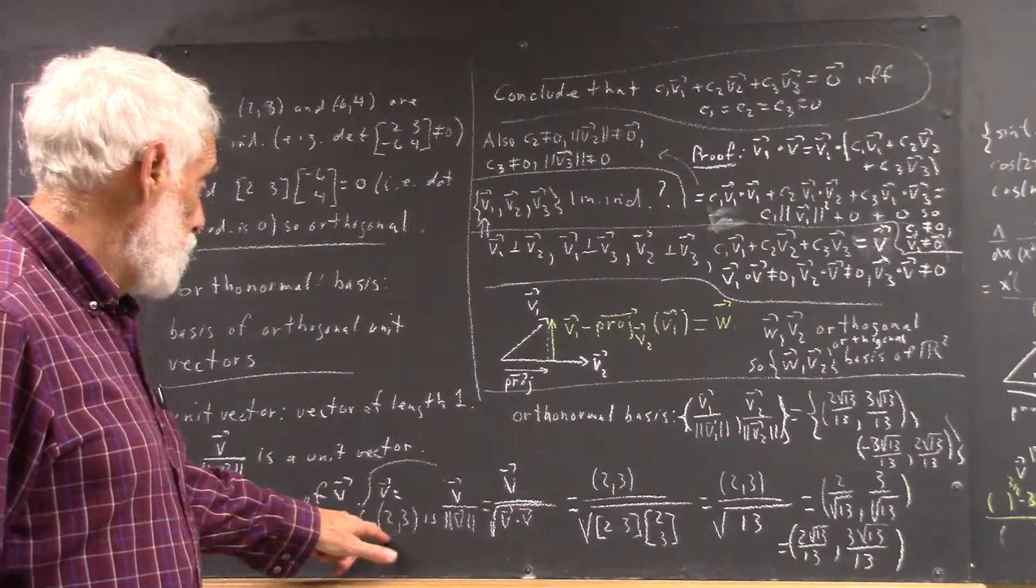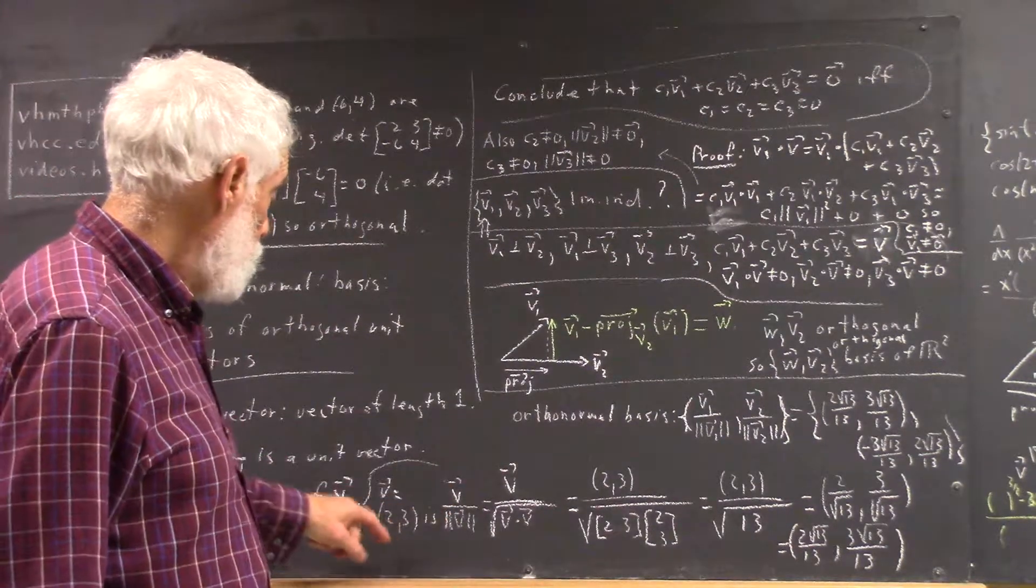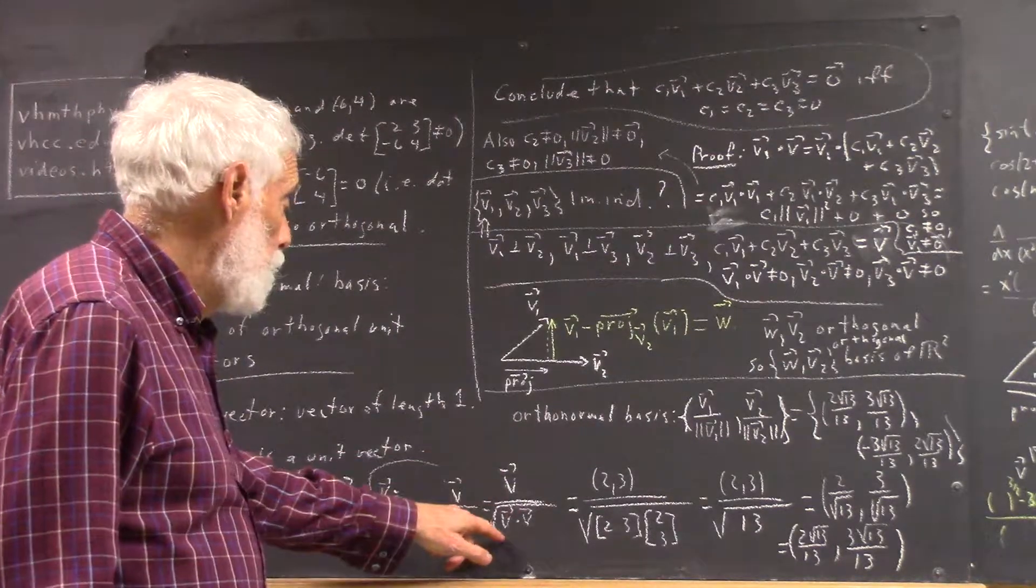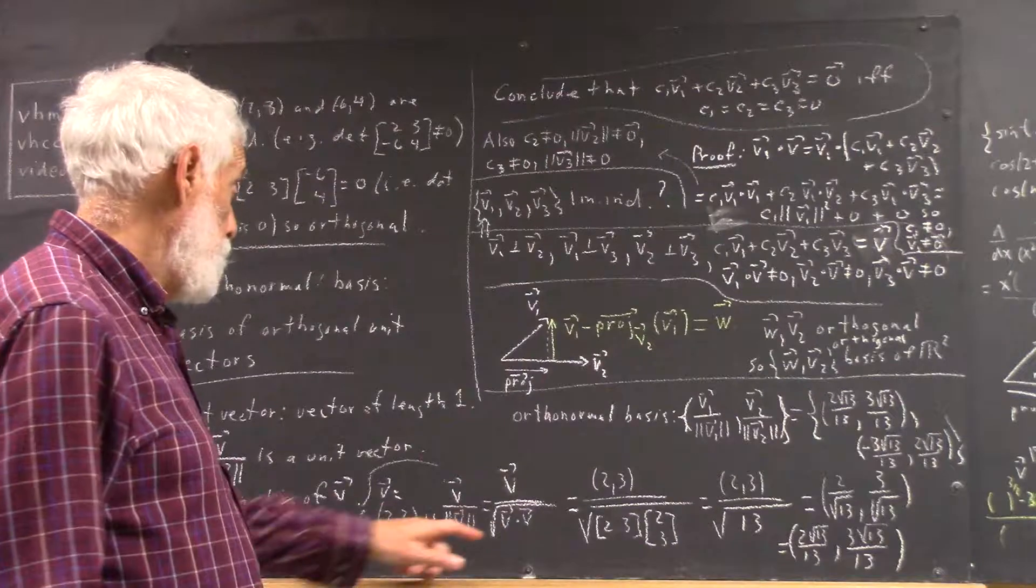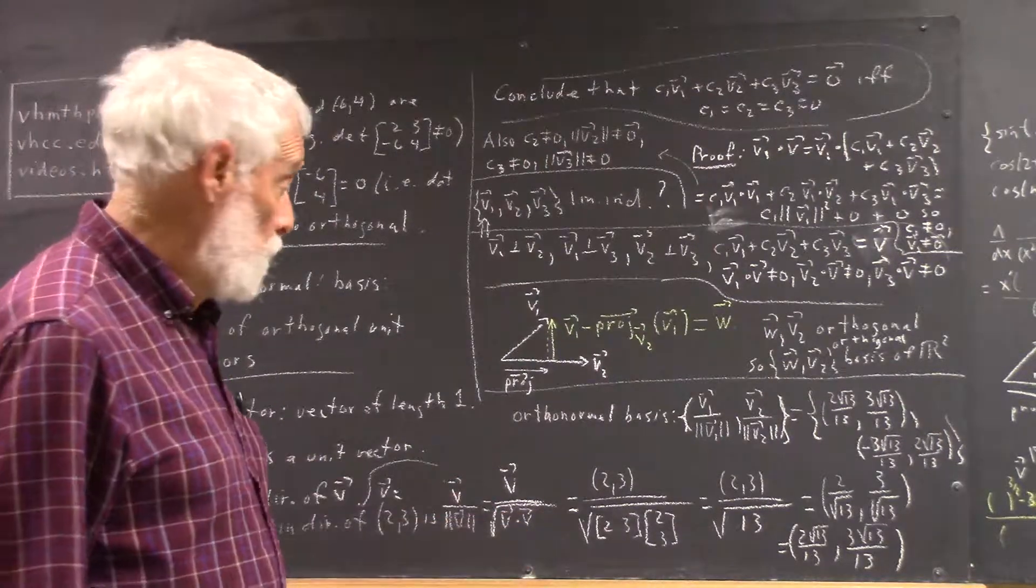So, unit vector in the direction of (2, 3) would be what? It would be V over magnitude of V, where V equals (2, 3). That's V over square root of V dot V, because the magnitude of a vector is a square root of its dot product with itself.